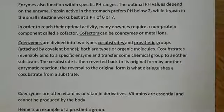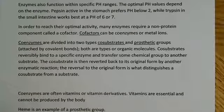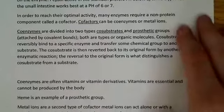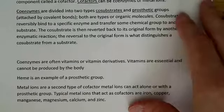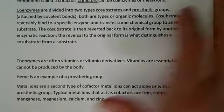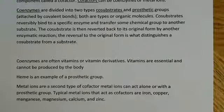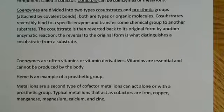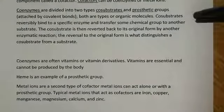In order to reach optimal activity, many enzymes require a non-protein component called a cofactor, and cofactors can be coenzymes or metal ions. Coenzymes are divided into two types: cosubstrates and prosthetic groups, which are attached by covalent bonds. It's kind of important to know that allosteric effectors, by contrast, are not attached by covalent bonds but rather by weak intermolecular forces like hydrogen bonds. Both cosubstrates and prosthetic groups are types of organic molecules.